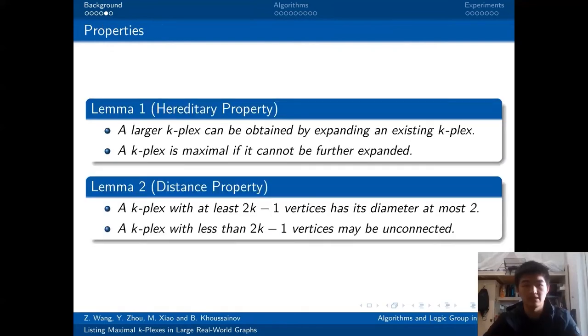There are some properties of the k-plex model. The first property is the hereditary property. That is, a larger k-plex can be obtained by expanding an existing k-plex. Therefore, we can define that a k-plex is called maximal if it cannot be further expanded.